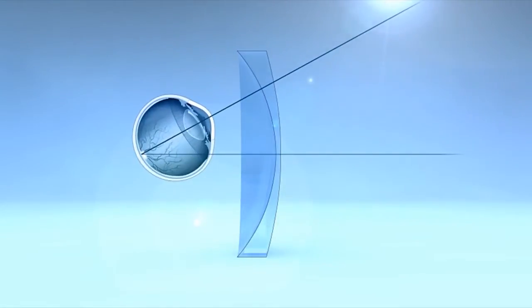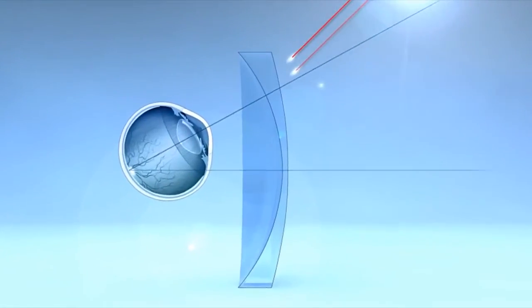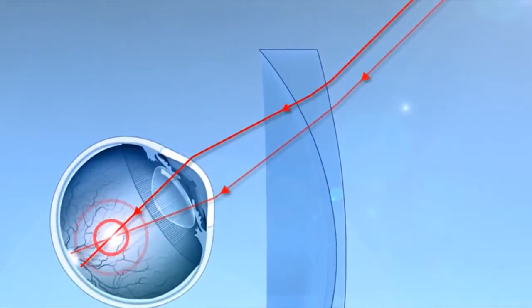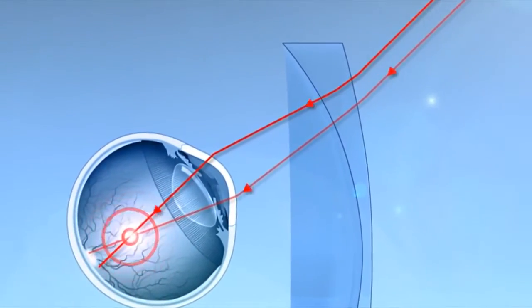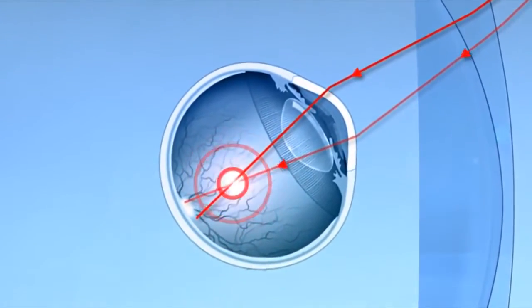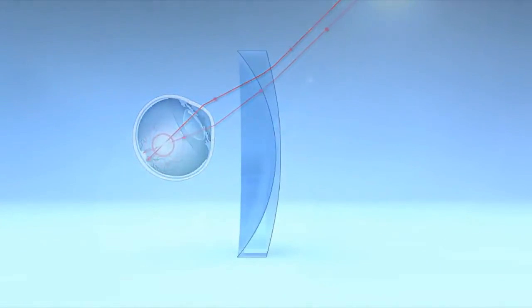This is a result of the oblique aberration that appears when light is refracted obliquely, which happens whenever we look in lateral gaze directions. Those lateral rays do not focus on the retina. Oblique aberration reduces the quality of vision outside the center of the lens.